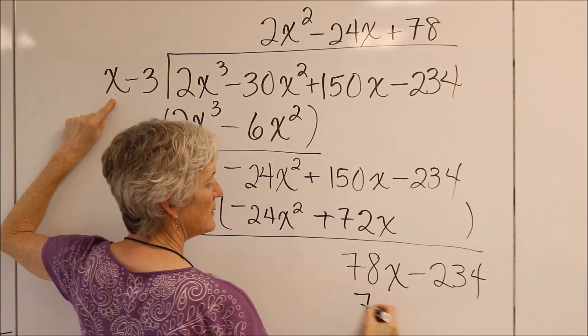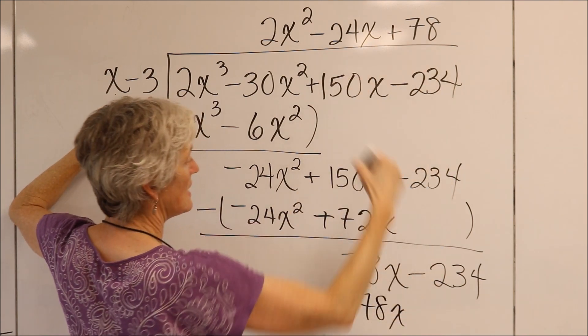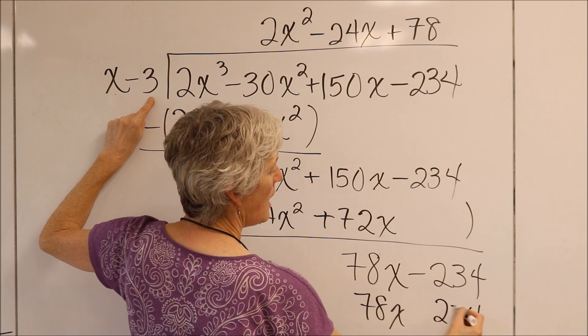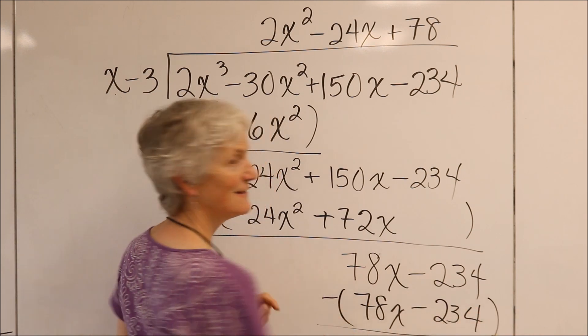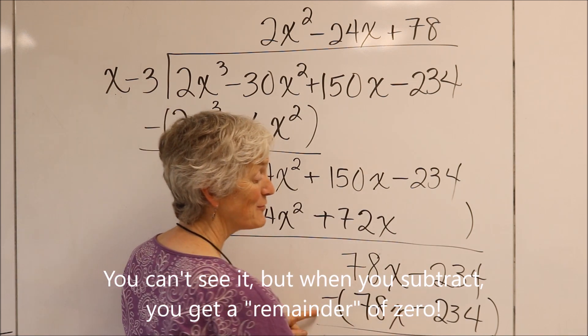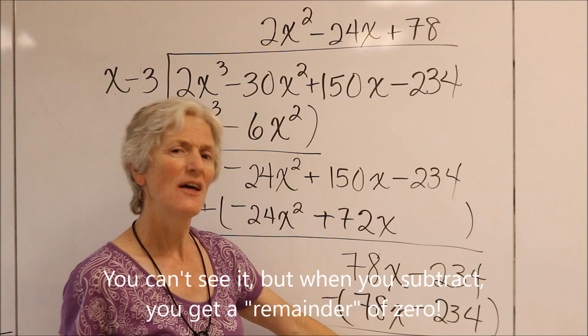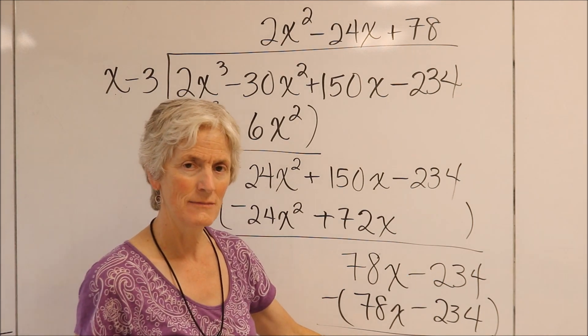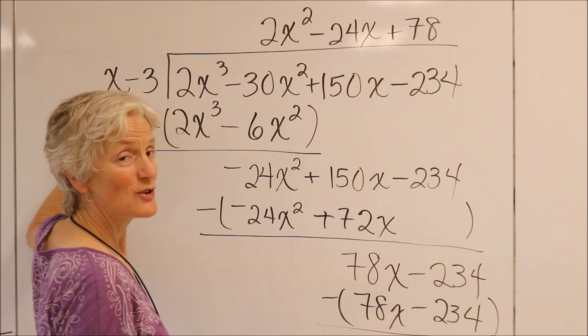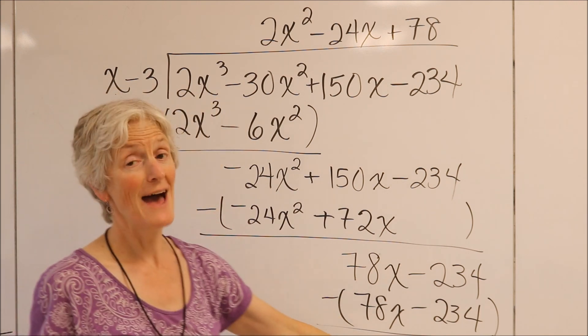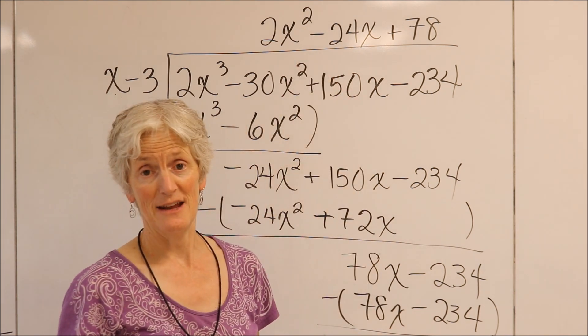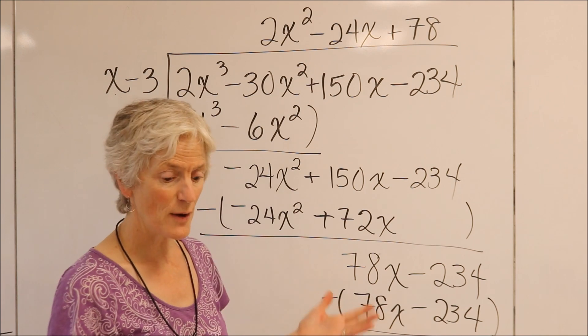Start again. x times what is 78x. That's going to be plus 78. 78 times x is 78x. 78 times 3 is, let's see, 234. I'm so glad this is working because, of course, I have to get a 0 there. If I get a remainder other than 0, what does that mean? Yeah, it means I made a mistake because I'm pretty sure x minus 3 is a factor, which means I have to get a remainder of 0. So if you don't get a remainder of 0, you probably dropped a negative somewhere. All right. So I was successful.